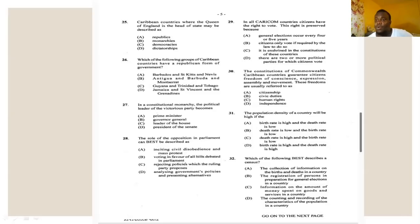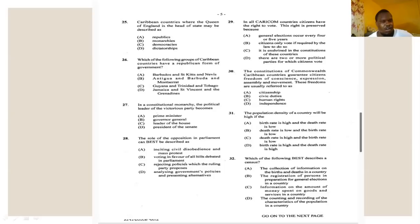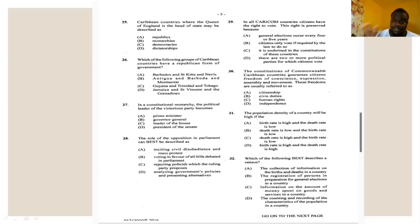Number twenty-six asks: which group of Caribbean countries has a republican form of government? Since Jamaica has a constitutional monarchy, any option containing Jamaica is incorrect — eliminating D. Option C says Guyana and Trinidad and Tobago, and both of those countries are republics. The answer for number twenty-six is C.